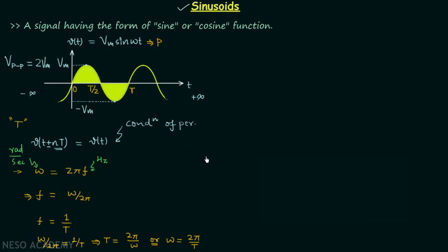Now what if I change the x-axis from t to ωt? In many waveforms you will find the x-axis as ωt, so it is important to understand what will happen to the values on the x-axis. When t is equal to 0, ωt is also equal to 0, so 0 will remain as it is.